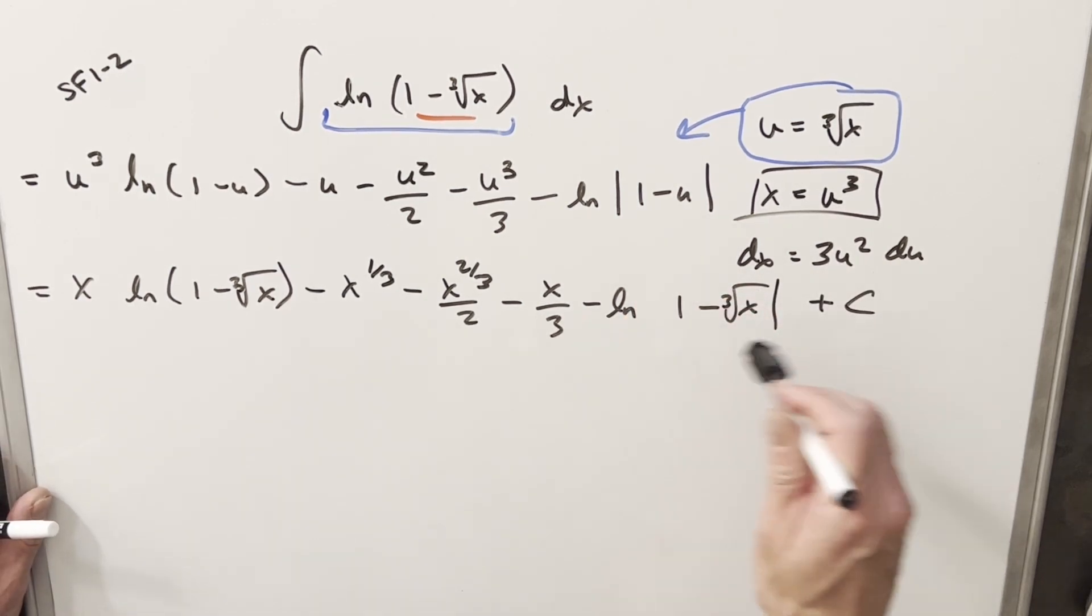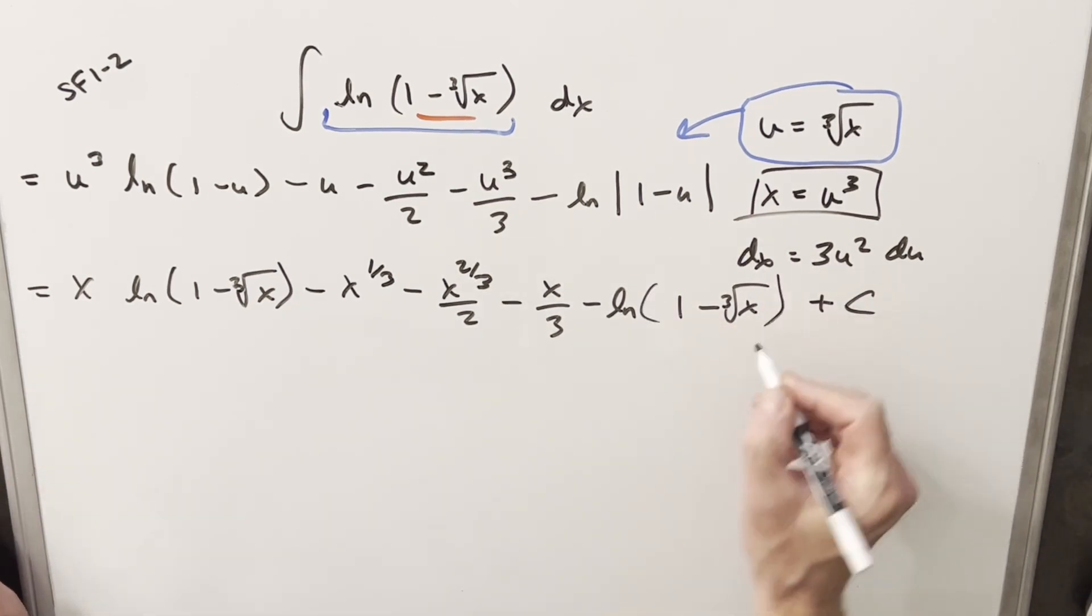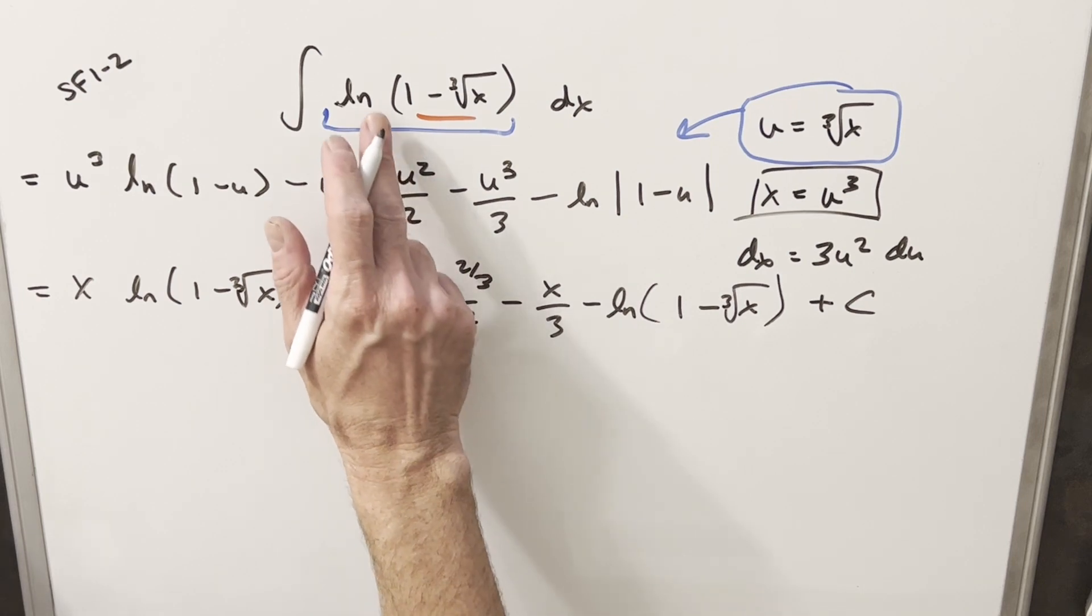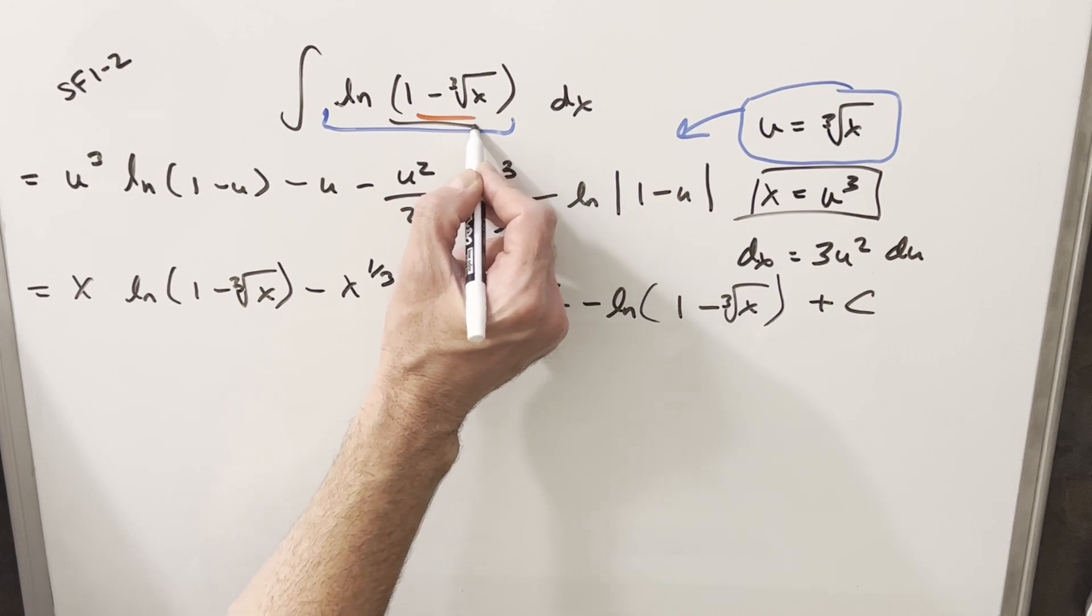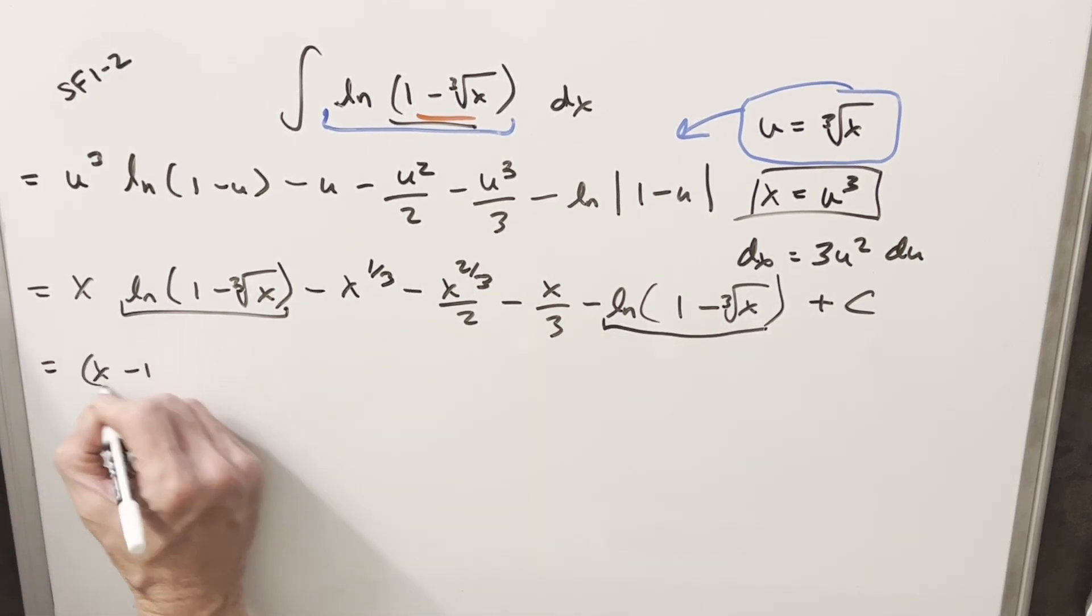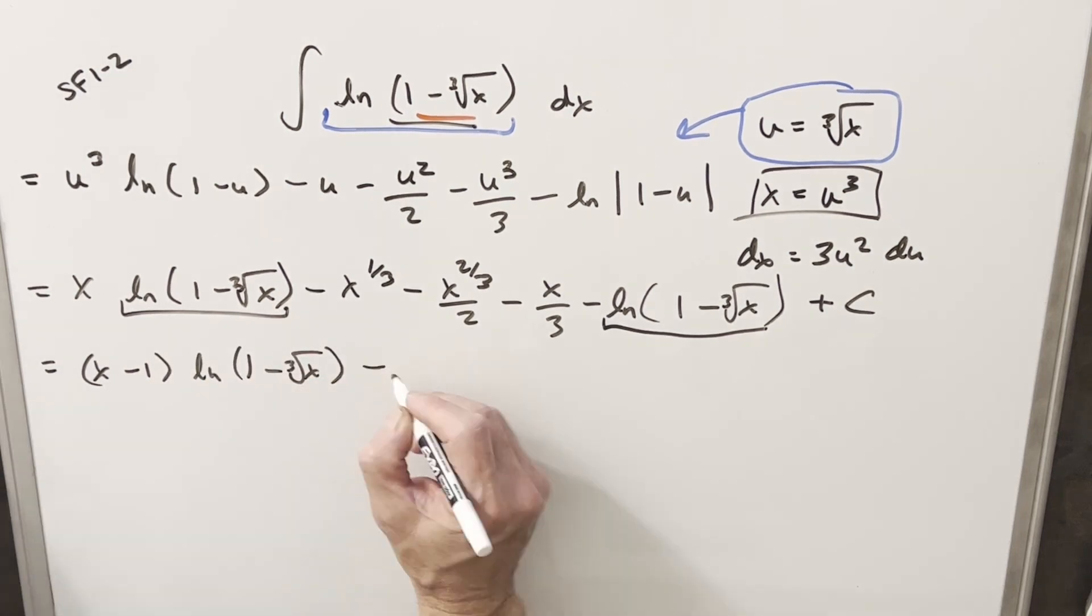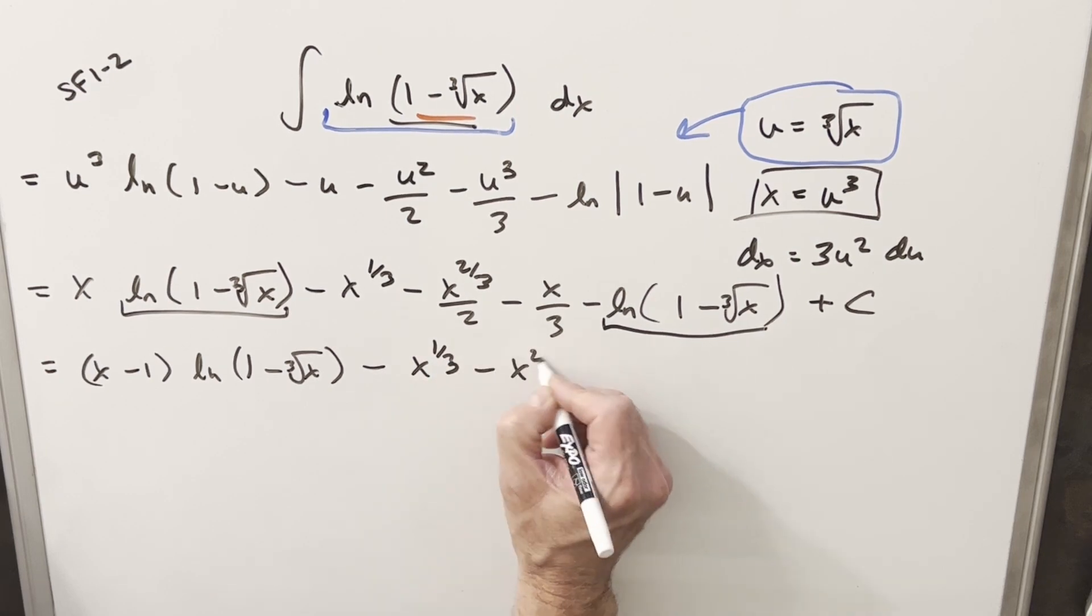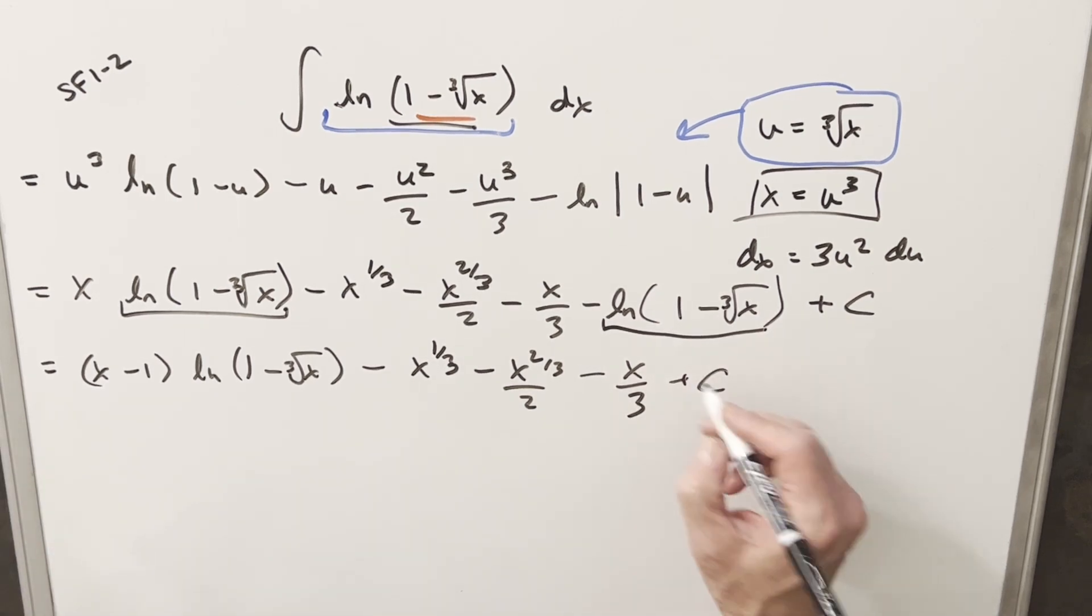And then this is going to be natural log absolute value 1 minus cube root of x. But then from here, I'm actually going to just drop my absolute value on this one right here. And the reason for that is because of the original problem, you can see we don't have absolute value on it here. And the input to natural log has to be positive. So this has to be positive. So that allows me to drop my absolute value here. Now, at this point, we have the same natural log here and here. So I'm just going to combine these two terms. We have an x and we have a minus 1 here. So I'm going to write this as x minus 1 natural log 1 minus cube root of x minus x to the 1 third minus x to the 2 thirds minus x over 3. Put a plus c on the end. And that's it.